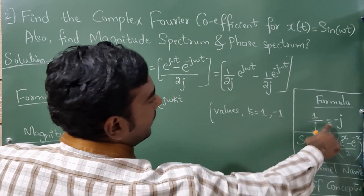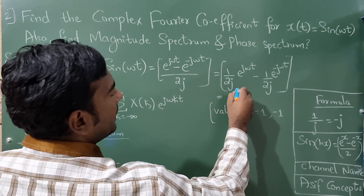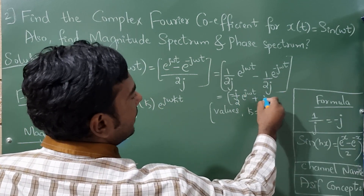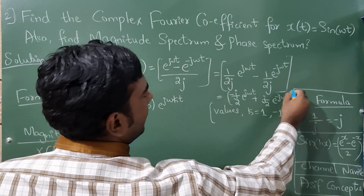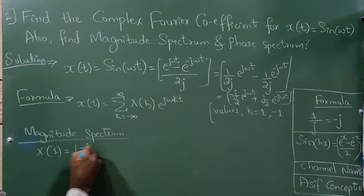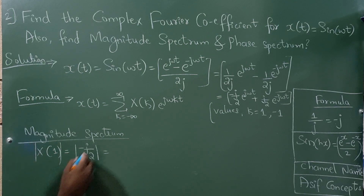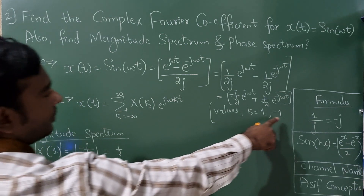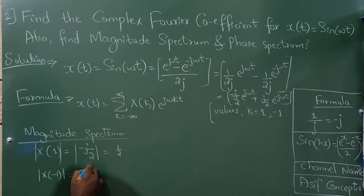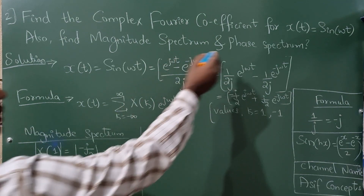You can write 1/j = -j, so this becomes (-j/2) e^(jωt) plus (j/2) e^(-jωt). The magnitude is always taken in modulus, so it will be positive always — even if the coefficient is negative, the magnitude is positive. So for k = 1 and k = -1, j/2 gives magnitude 1/2.